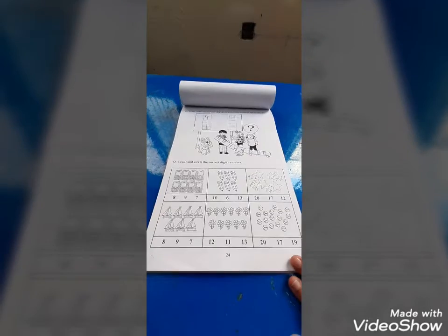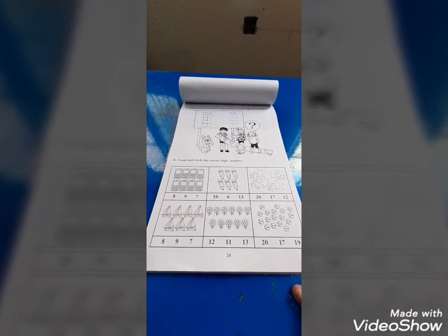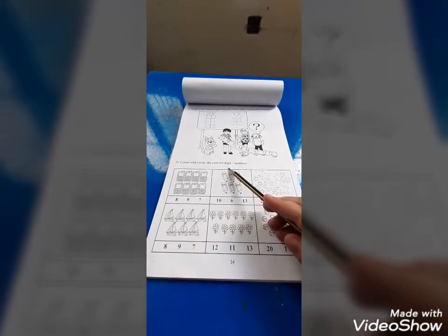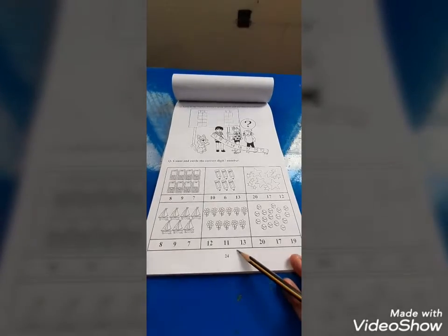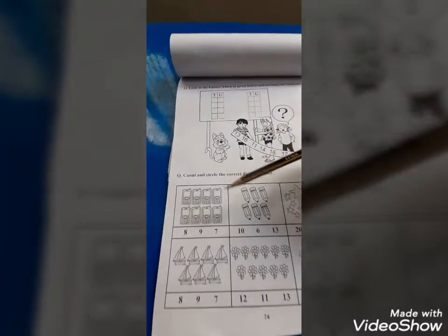My dear students, this is your number lecture and I will teach you about how you can count and circle the correct digit. This is page number 24 from your workpack. First of all, you have to count these phones.